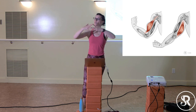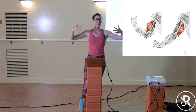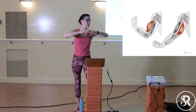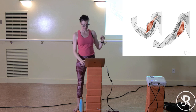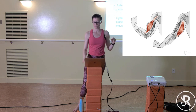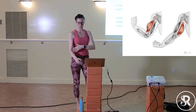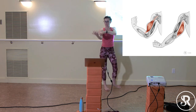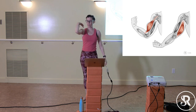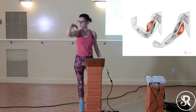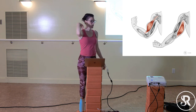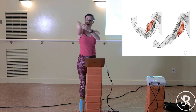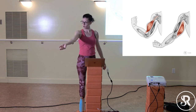When muscles activate, they can only contract — all they can do is shorten. Muscles can't actively lengthen, so muscles have to work in pairs. The bicep contracts and makes the elbow bend; the bicep can't push apart, so there has to be an opposing muscle — the tricep — which contracts to open it back up again.